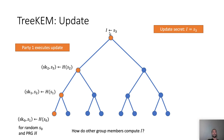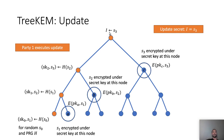How do other group members compute the group secret? Party 1 encrypts the seeds SI using the public keys of the co-path nodes. S1 is encrypted under the public key of node A, and since party 2 knows SKA it can recover S1 and compute all secrets to the root. Similarly, party 1 encrypts S2 under PKB, and since parties 3 and 4 know SKB because it is on their path to the root, they can decrypt, recover S2 and compute S3. The same applies for node C: those four parties from 5 to 8 know SKC and can directly decrypt the ciphertext and recover S3.